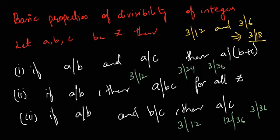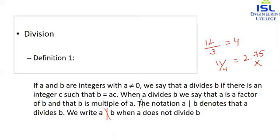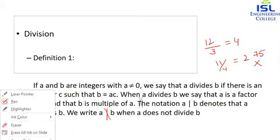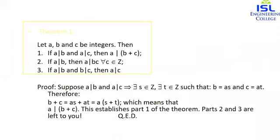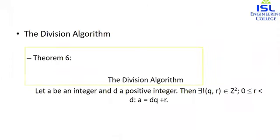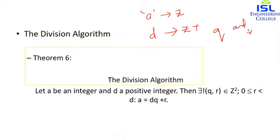The next topic is the division algorithm. If a is an integer and d is a positive integer, then there are unique integers q (quotient) and r (remainder) with 0 ≤ r < d such that a = dq + r. So a is the dividend, d is the divisor, q is the quotient, and r is the remainder — this is basically: dividend = divisor × quotient + remainder.